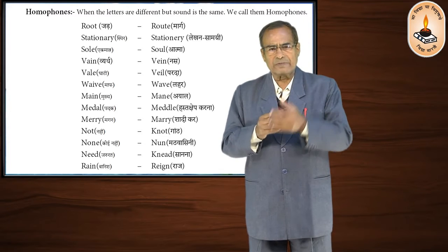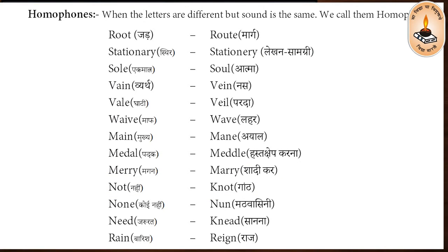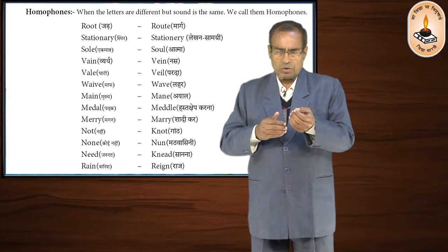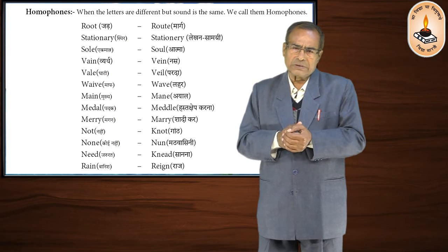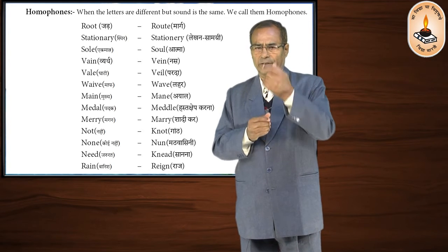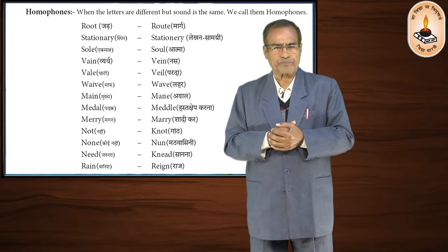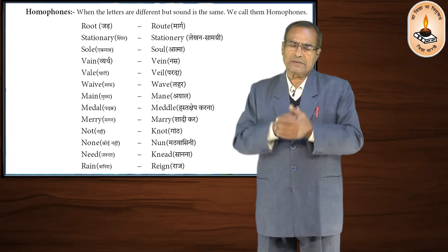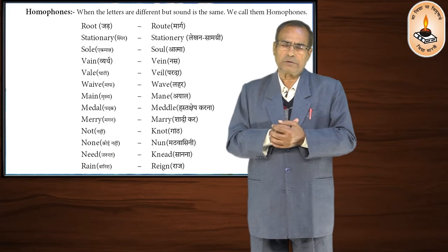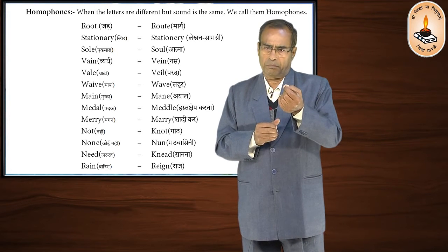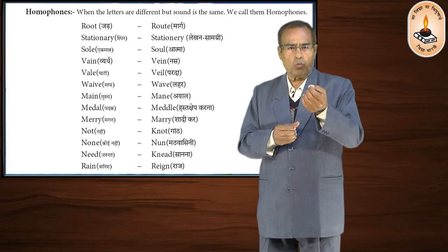Just as we have the word 'root', there are two words: r-o-o-t and r-o-u-t-e. The first word, 'root', means 'jada' — that is the part of a plant. The second word, 'route', means 'marg' — that is, a way.